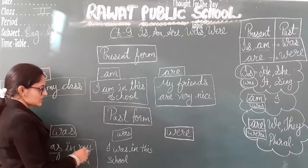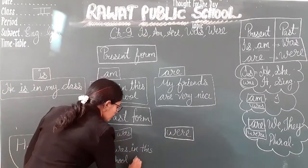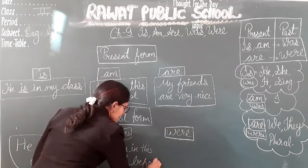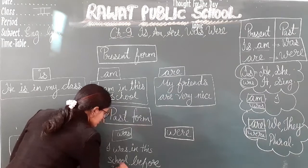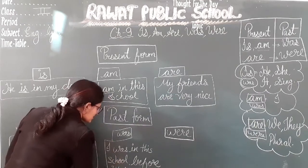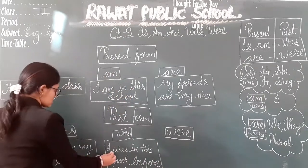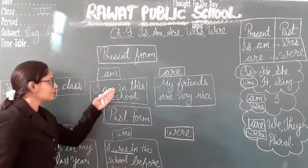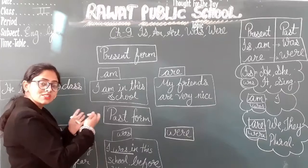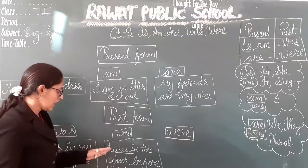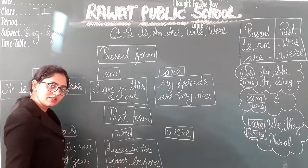I was in this school before two years. So if you are talking about two years ago, that time you use was: I was in this school before two years. In the present it is 'I am in this school,' and in the past it is 'I was in this school before two years.' Understand?